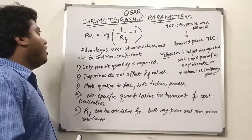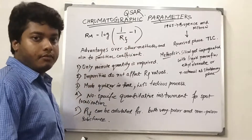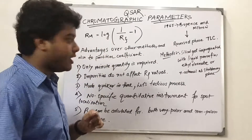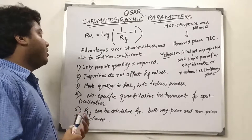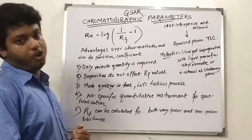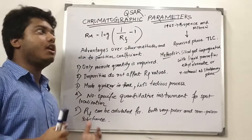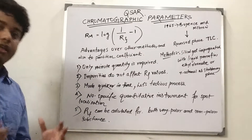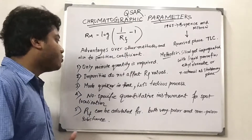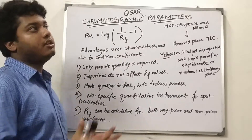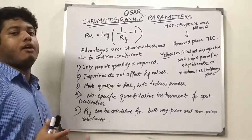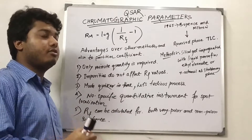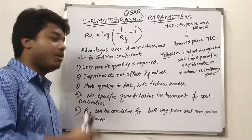Rm values are not a direct application of the retention factor — the retention factor is actually a log value. Rm values are also not true equilibrium parameters, so they do not affect equilibrium parameters, which is another advantage. The determination is also much quicker, as chromatography is now a very automated process requiring a less tedious and less time-consuming procedure.